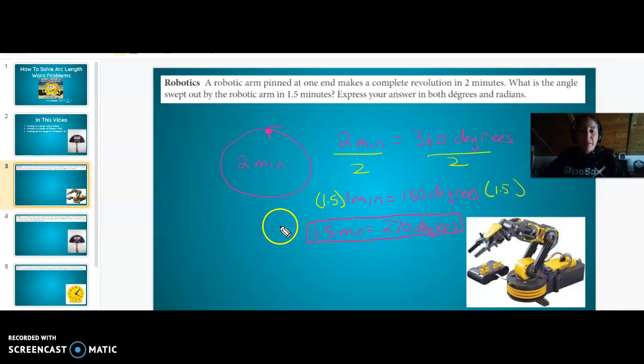Well, we can convert from degrees to radians by multiplying by π over 180. So radians then would equal 270 times π over 180. This is equal to 270π over 180, which if you reduce, divide by 90, this would be 3π over 2. So in degrees, in 1.5 minutes we went 270 degrees. In radians, we went 3π over 2 radians in 1.5 minutes.